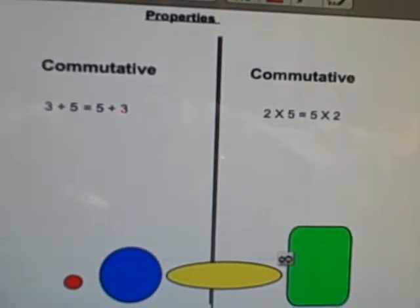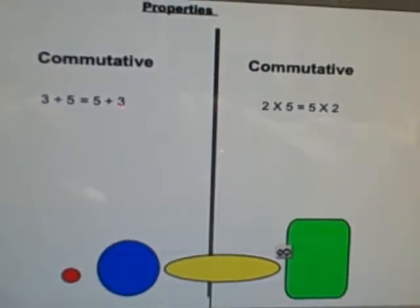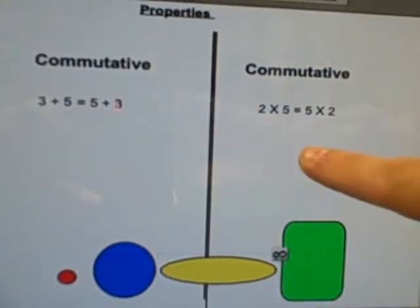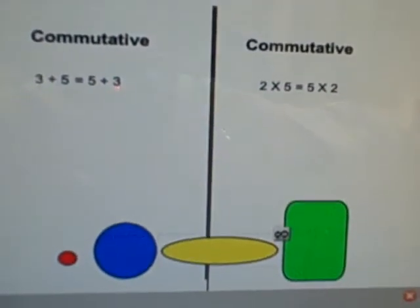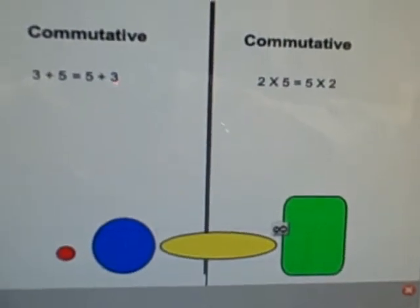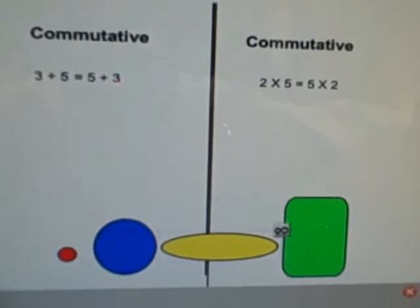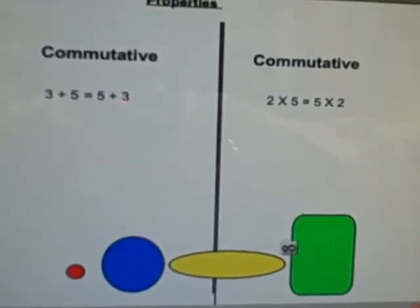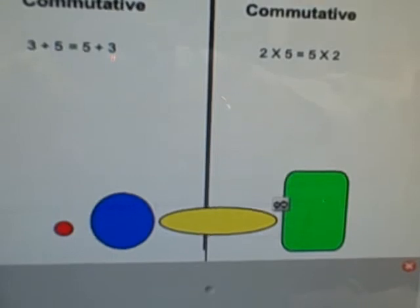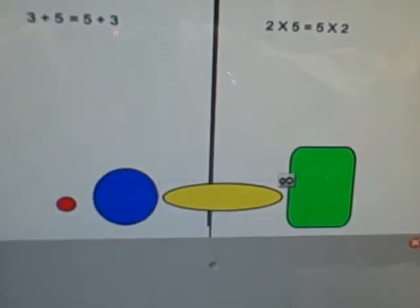So today we're going to look at the commutative property, both for addition and multiplication. The commutative property states that you can add two numbers like 3 plus 5, and it would be the exact same amount if you added them up as 5 plus 3.